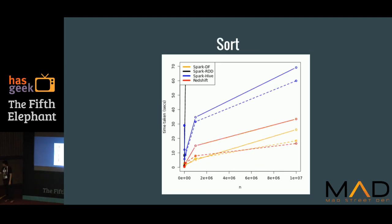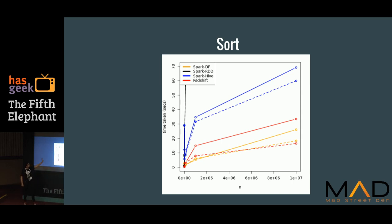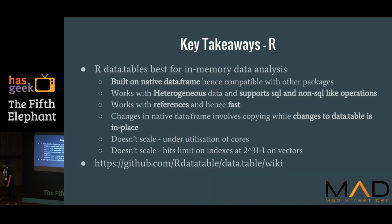For sort, here again you can see comparable performance. The red is Redshift again and the blue is obviously Spark on Hive. What's very interesting is DF has done well over here.